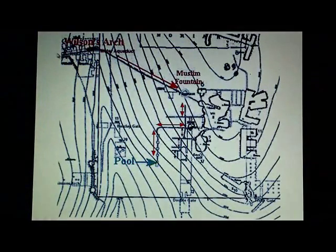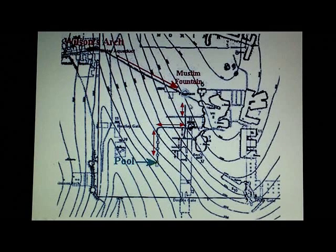Now the aqueduct flowed down to the Temple Mount. It entered Wilson's arch into the Mount and it was laid towards the south. Now if the temple had been at the Dome of the Rock then they would have brought the aqueduct to the north. The Muslim fountain here was built after 600 AD sometime and water channels here were blocked off at that time.